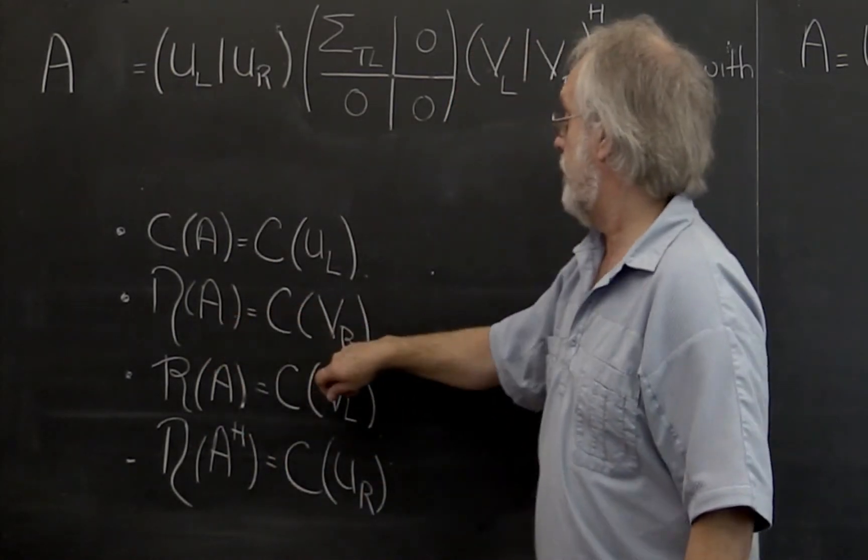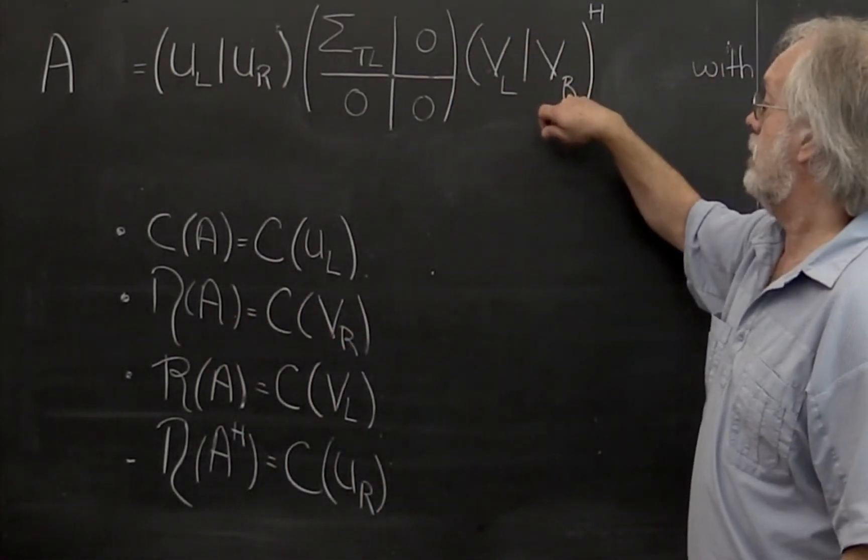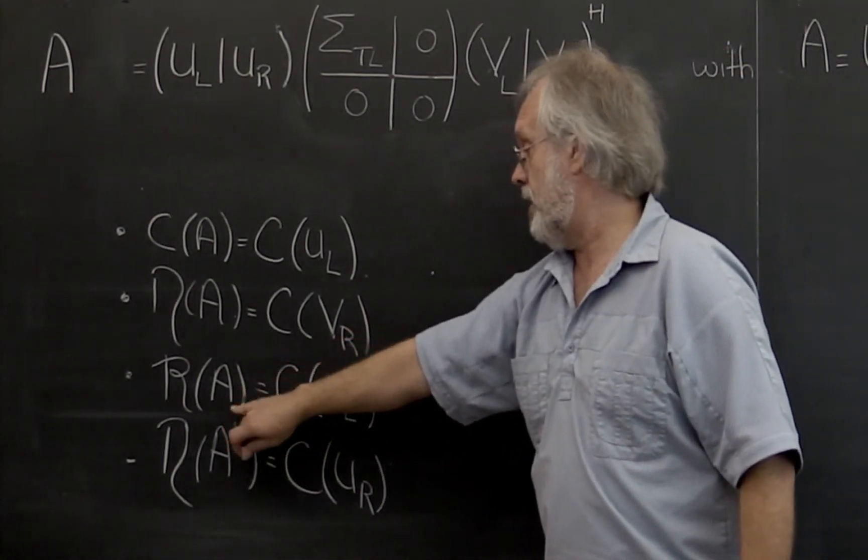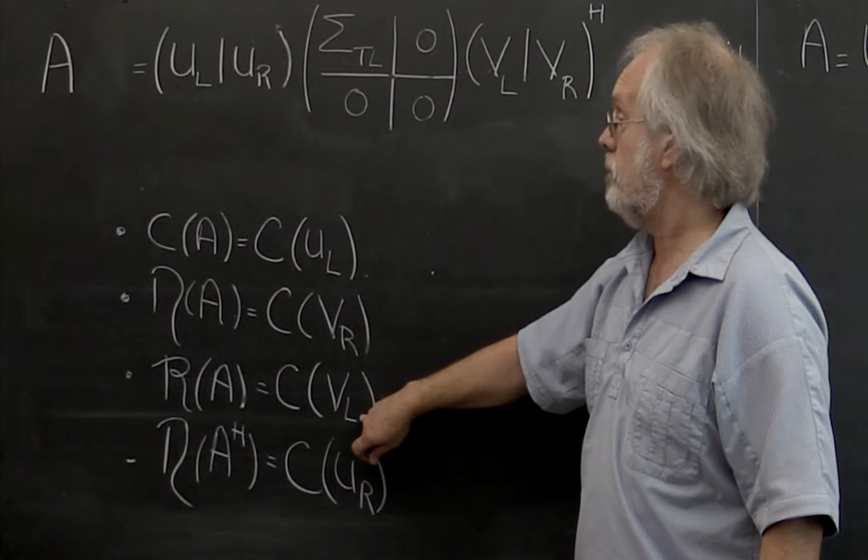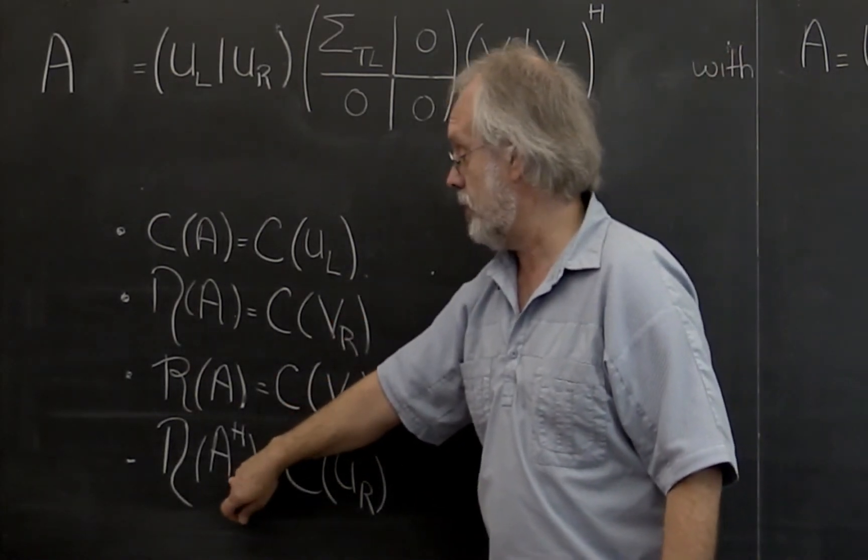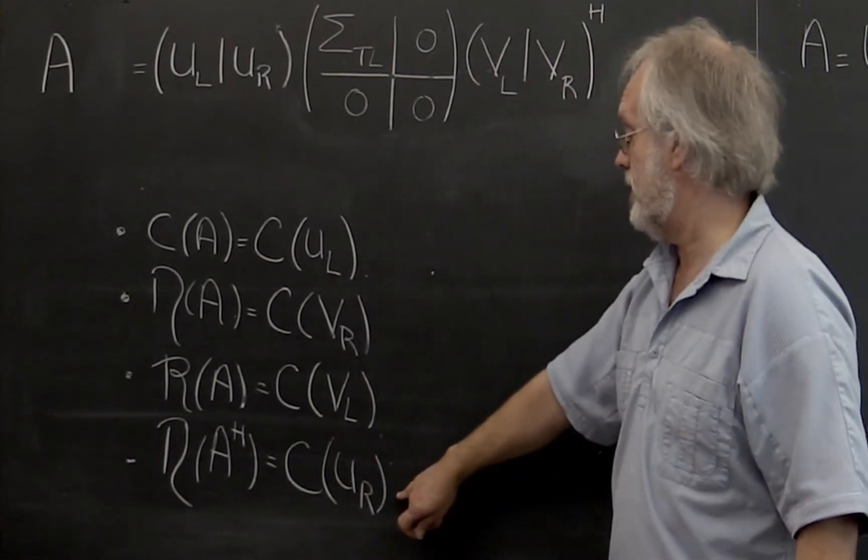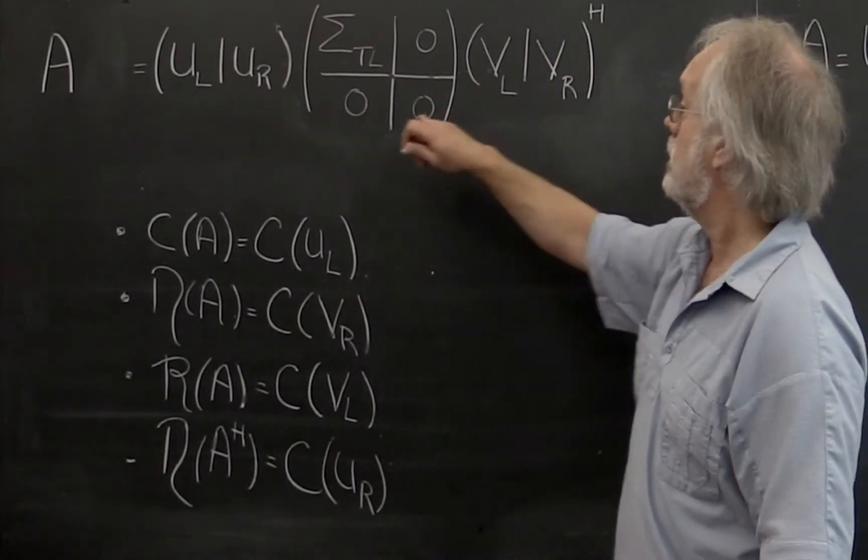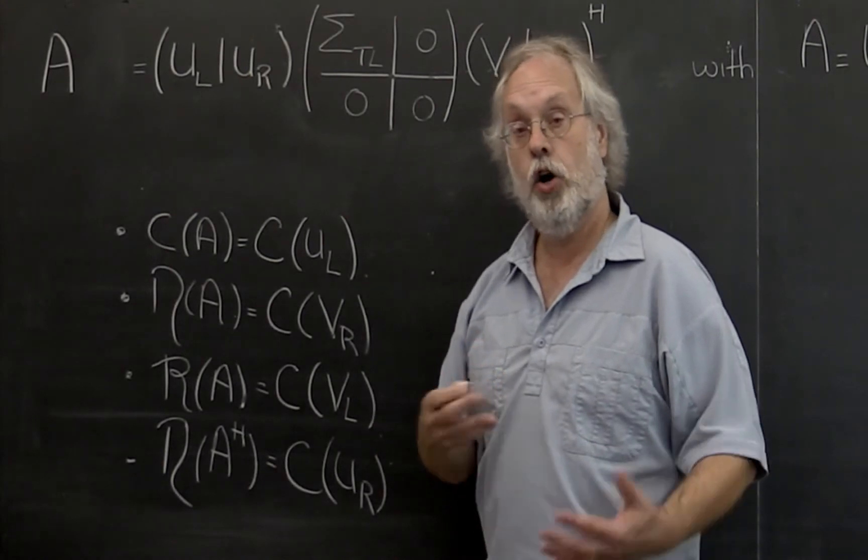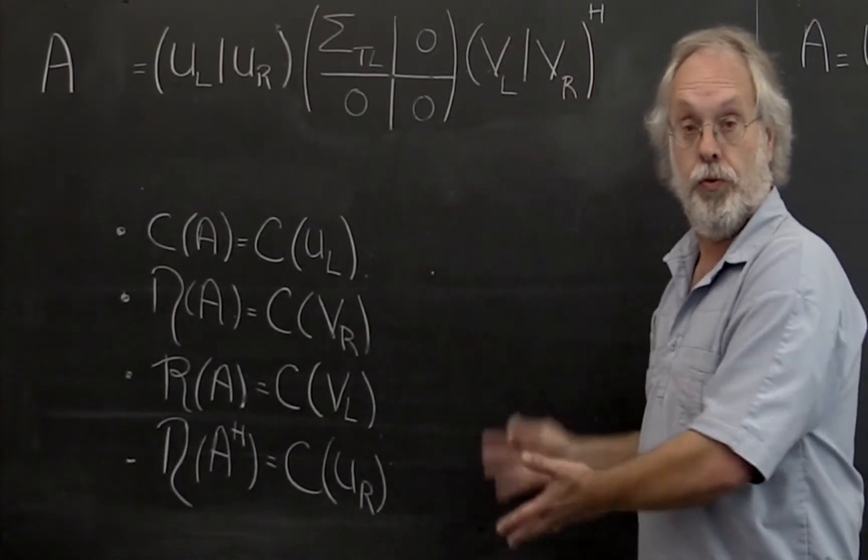The null space of A is just the column space of V_right. The row space of A can be described as the column space of V_left, and the left null space of A can be described as the column space of U_right. And in a homework you're going to prove all of these.